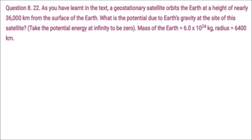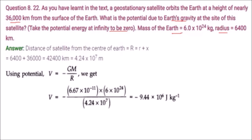Ek geostationary satellite orbit karta hai earth ko, uski height hai kareeban 36,000 km surface se earth ke surface se. Kya potential hai — what is the gravitational potential due to earth's gravity at this site of the satellite? Potential energy infinity pe 0 maanne hain. Mass earth ka diya hai. Jo distance hai satellite ka center of earth se: 6400 km + 36000 km ≈ 4.24 into 10^7 meter. Potential = minus GM/R. G hamein pata hai, mass diya hua hai, r humne nikaal liya — dono ki values rakh dijiye — aapke paas yeh value aa jaayegi.